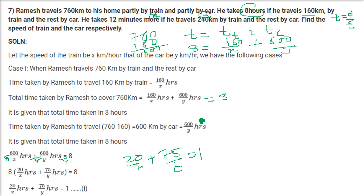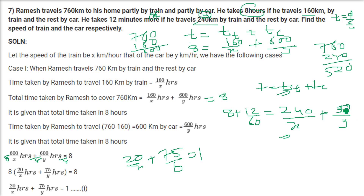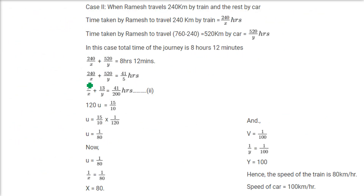The second condition: he takes 12 minutes more, so total time is 8 hours and 12 minutes, which is 41/5 hours. He travels 240 km by train and 520 km by car. So 240 by X plus 520 by Y equals 41/5. Dividing by 40: 6 by X plus 13 by Y equals 41/200. Let 1/X equal U and 1/Y equal V, and solve the two equations.